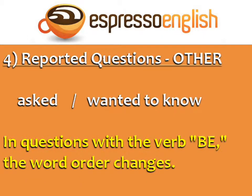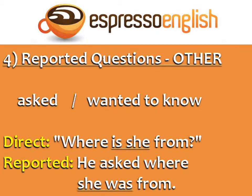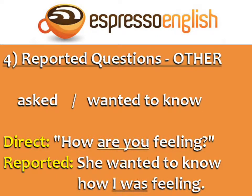In reported questions with the verb be, the word order changes. For example: Direct: 'Where is she from?' Reported: 'He asked where she was from.' You can see the word order changes — 'is she' becomes 'she was' in the reported question. Here's another example. Direct: 'How are you feeling?' Reported: 'She wanted to know how I was feeling.' The word order changes from the direct to the reported question.